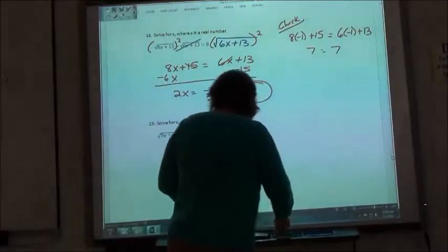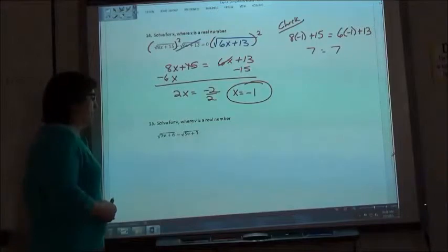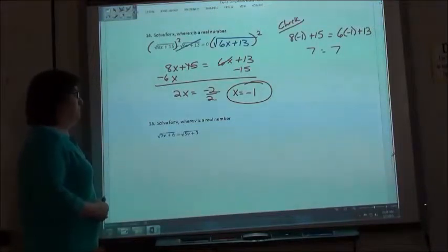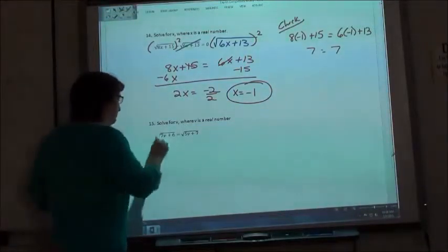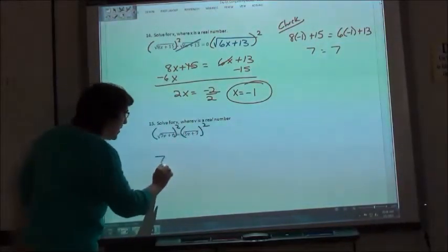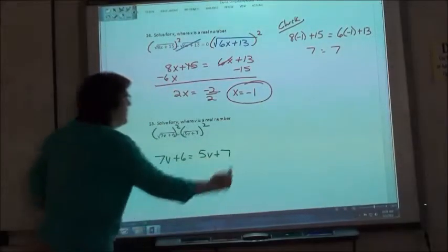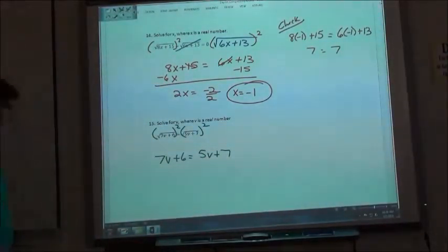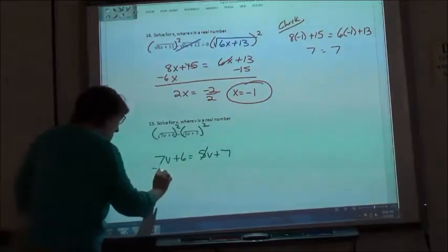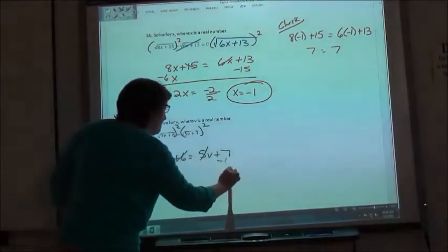15 looks the same kind of thing, right? What are we going to do? We are going to, oh, a little bit back. 7b plus 6 equals 5b plus 7. So we're squaring each side, so 7b plus 6 equals 5b plus 7. Then what are we going to do? Then we are going to move negative 5 over to 7, and the 6 is going to be minus 6.